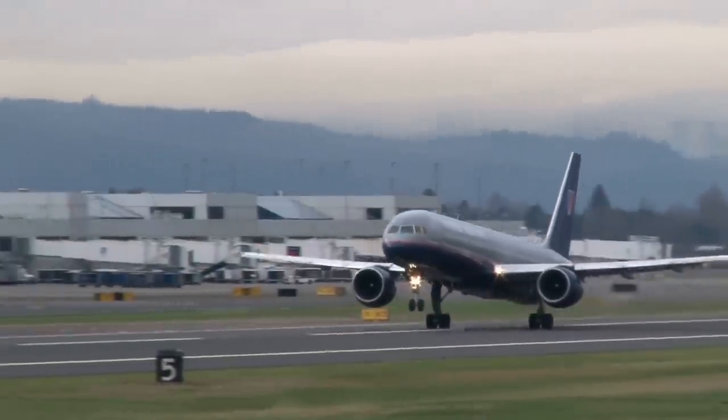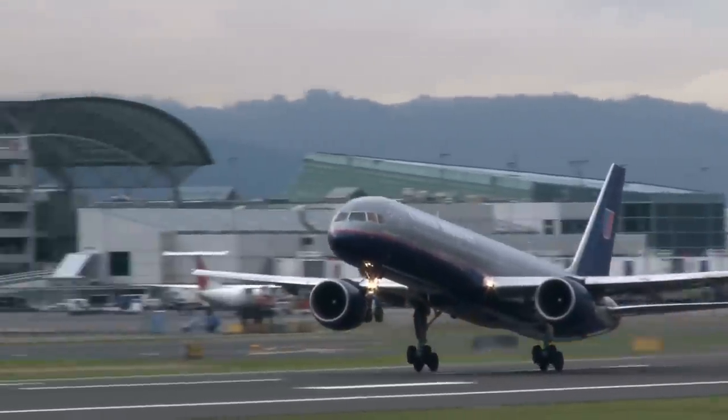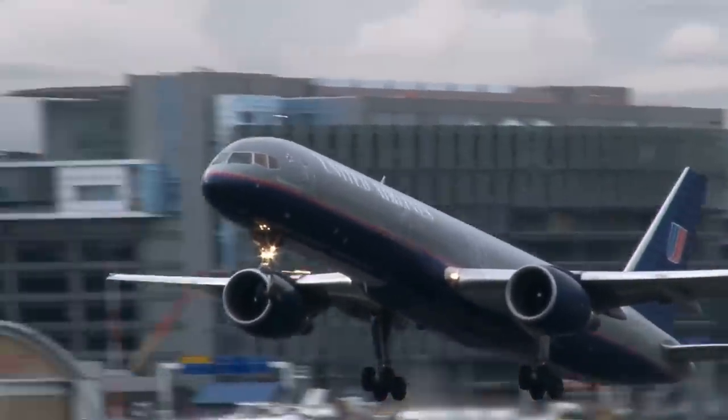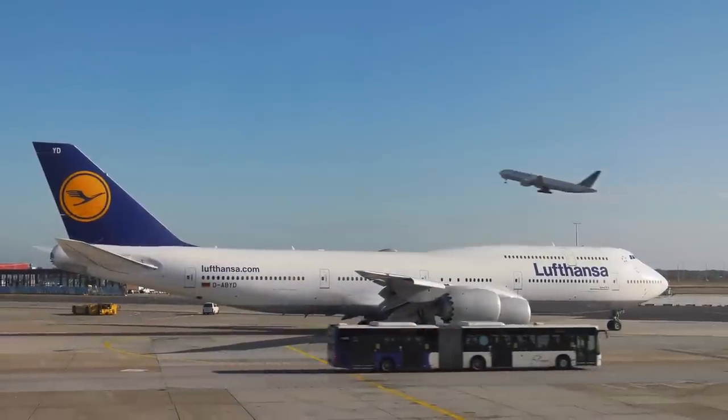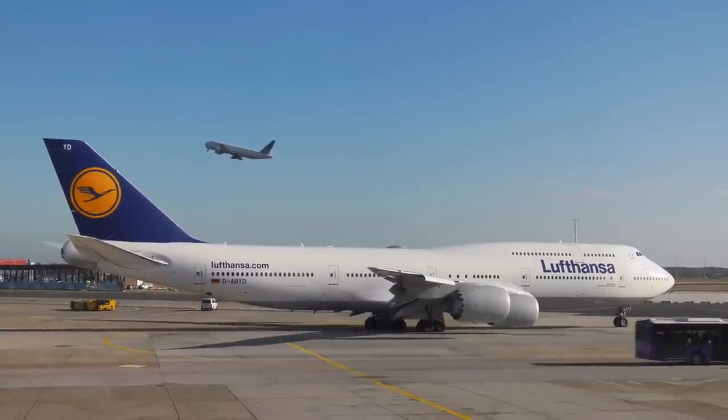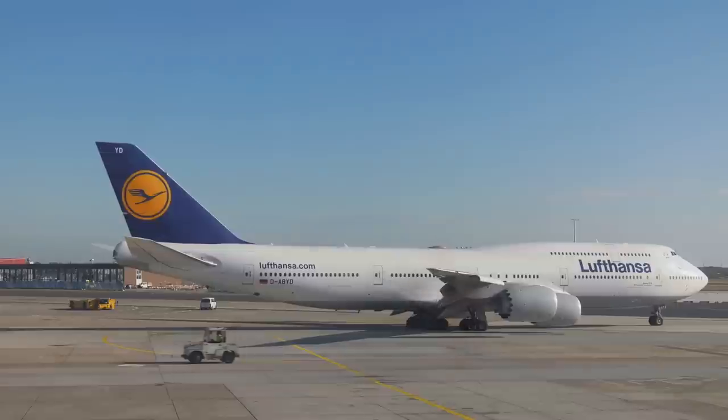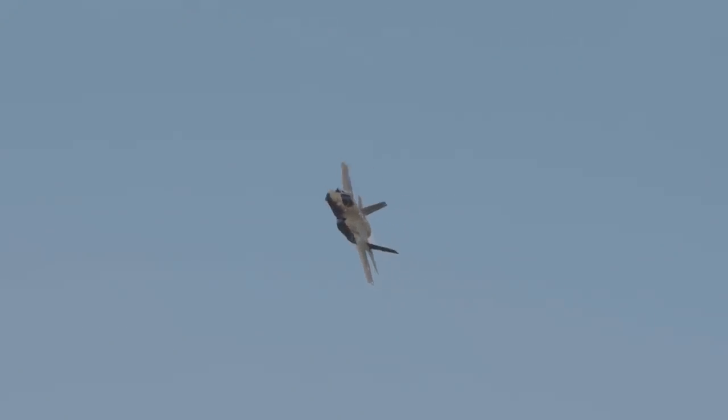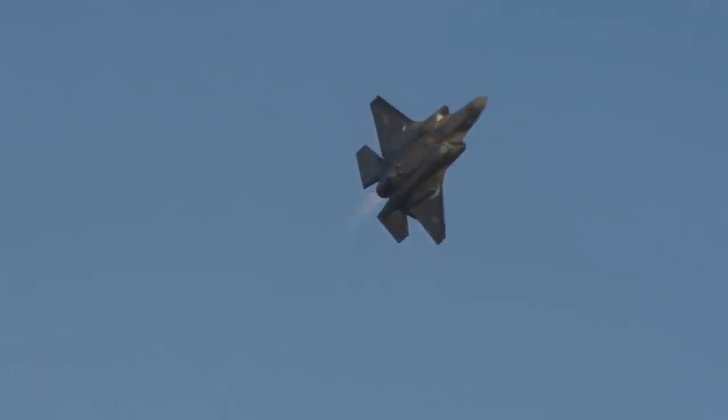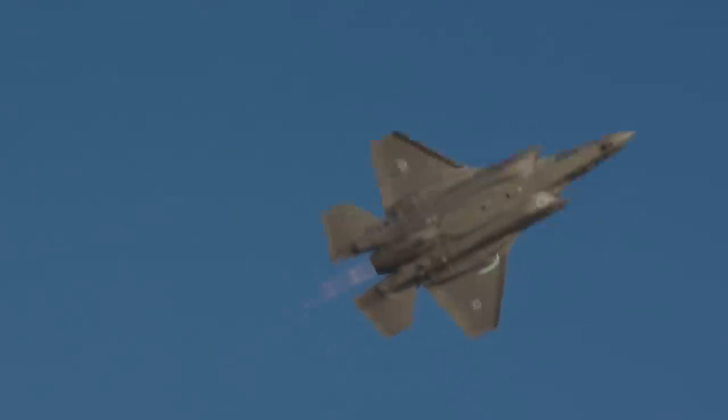Secondly, as a general rule of thumb, the larger an object is, the greater the radar cross-section. Large commercial airliners with lots of surface area are able to bounce back a lot of the radar system's power, while much smaller and more nimble jets such as the F-35 have much less surface area, which immediately lowers its radar cross-section.